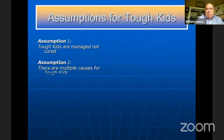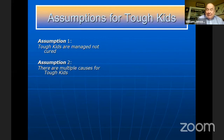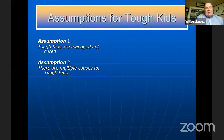Assumption number two: there are multiple causes for Tough Kids. It's simplistic to think there's one thing causing it. We often blame parents, but parents sometimes blame educators, and there are also genetic factors. The ratio is four-to-one males to females, which has a genetic base. And what a child does at school, he generally does at home — so blaming each other is counterproductive.